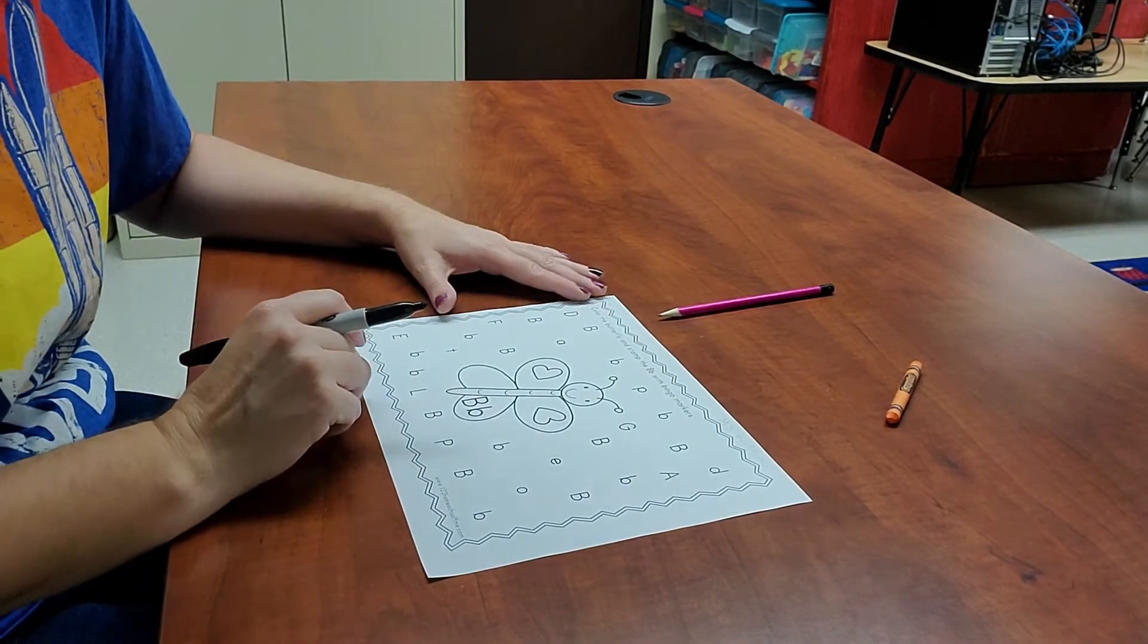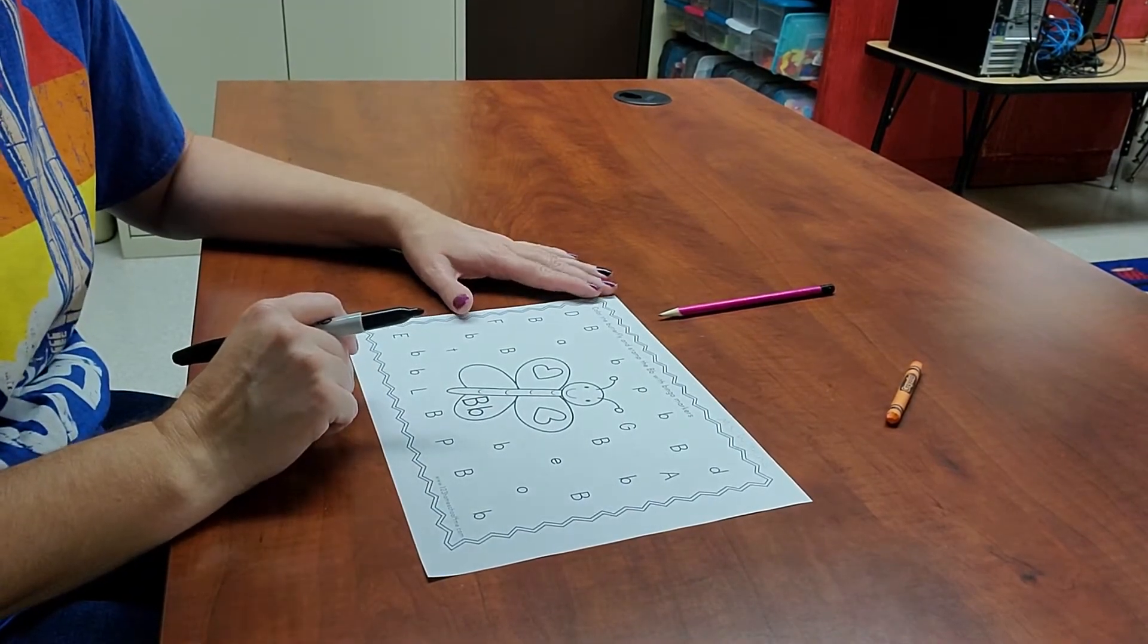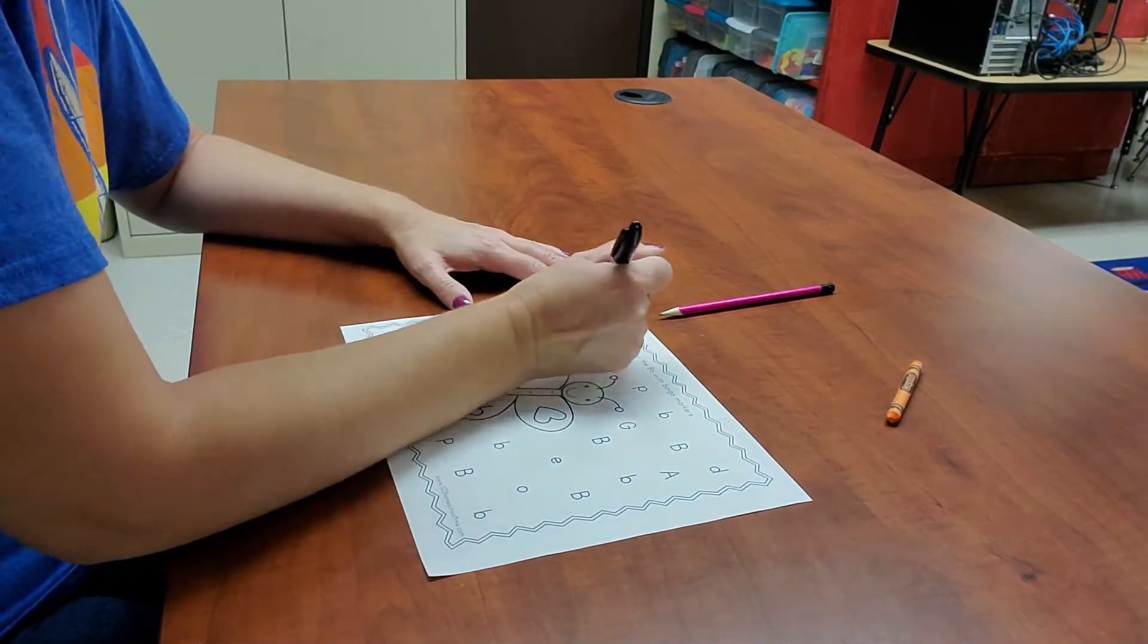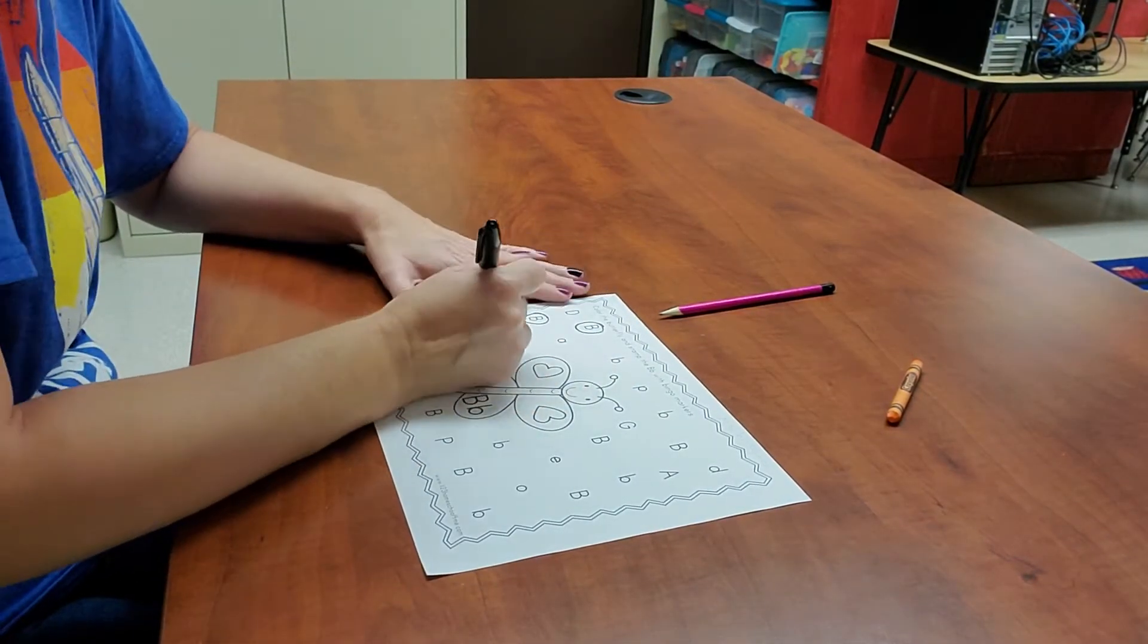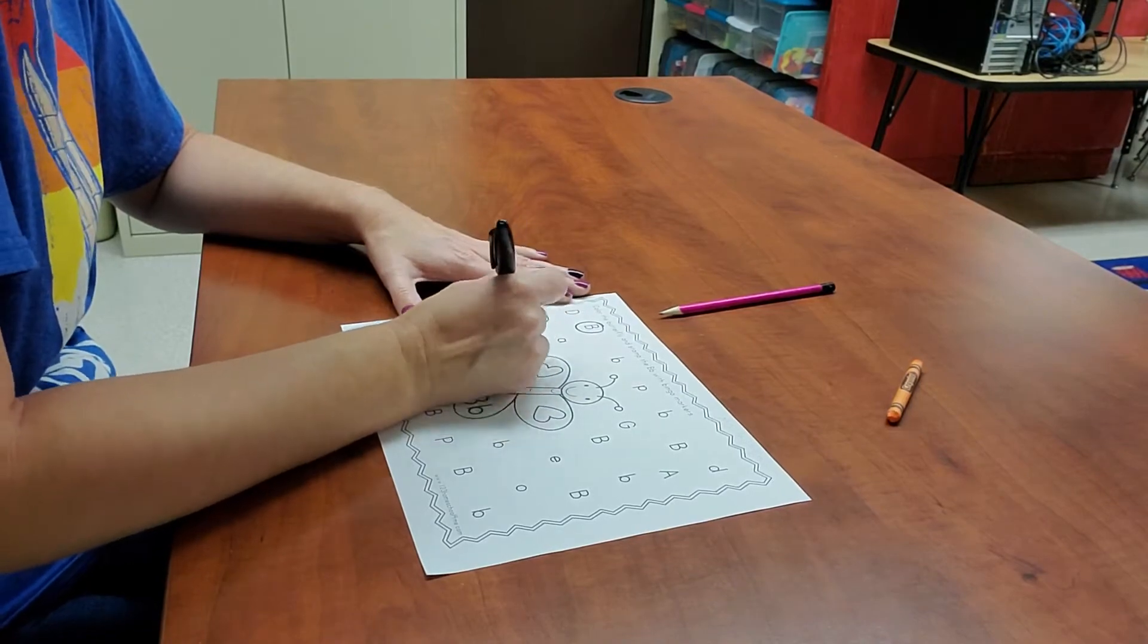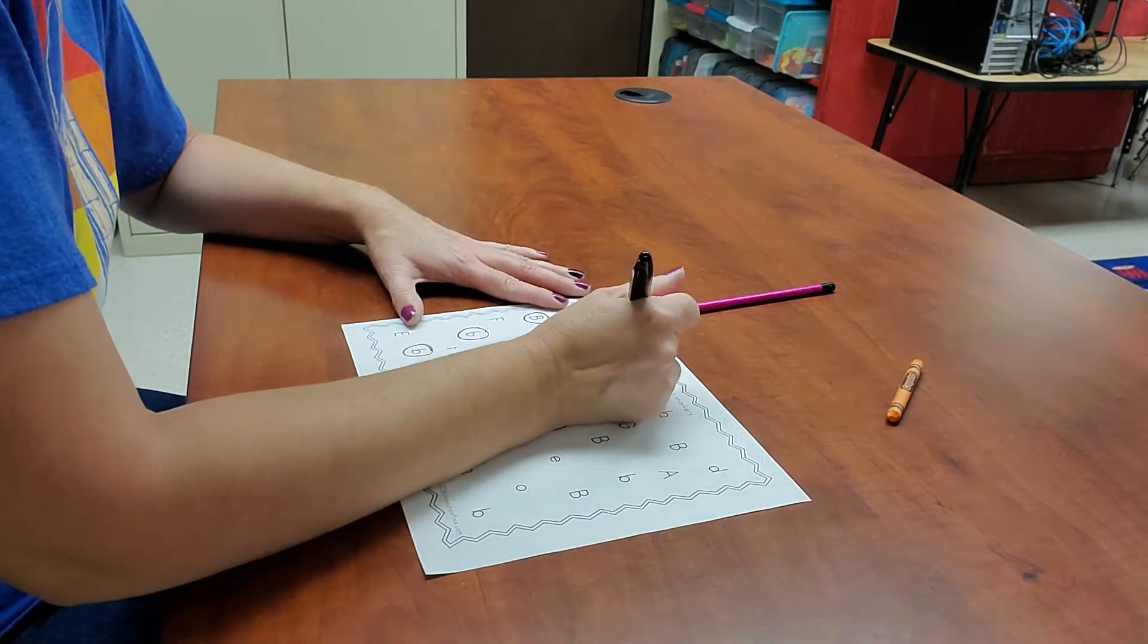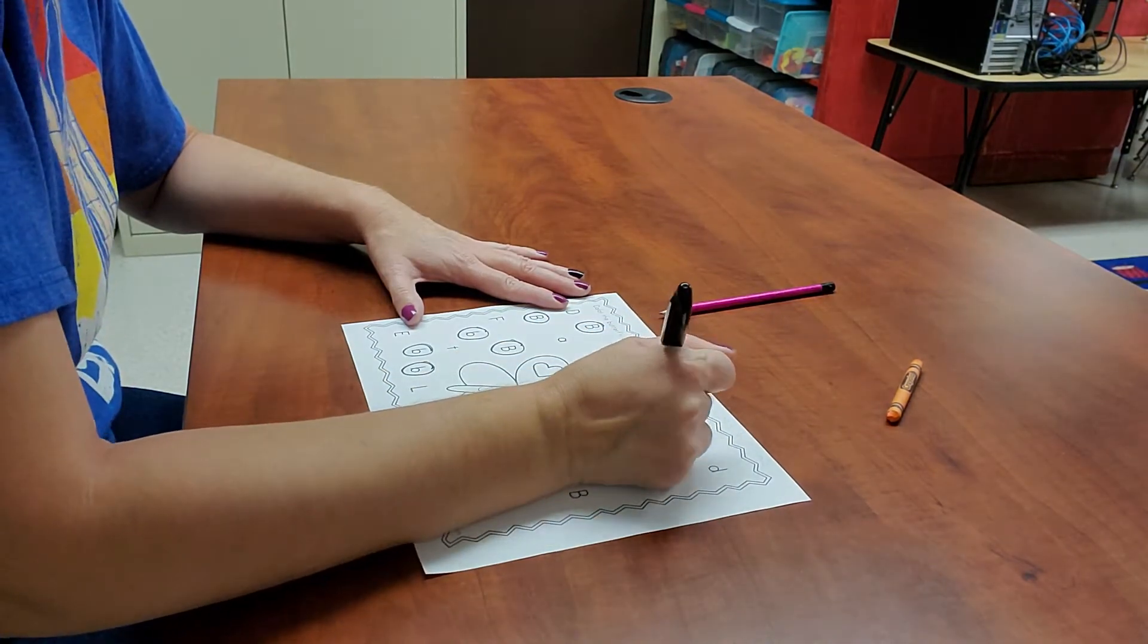All right, so you're just going to circle your big Bs or your uppercase Bs and your lowercase Bs. Do not let it trick you. Do not do the Ds or the Ps or the Qs. We do not want to be tricked. We only want the Bs.